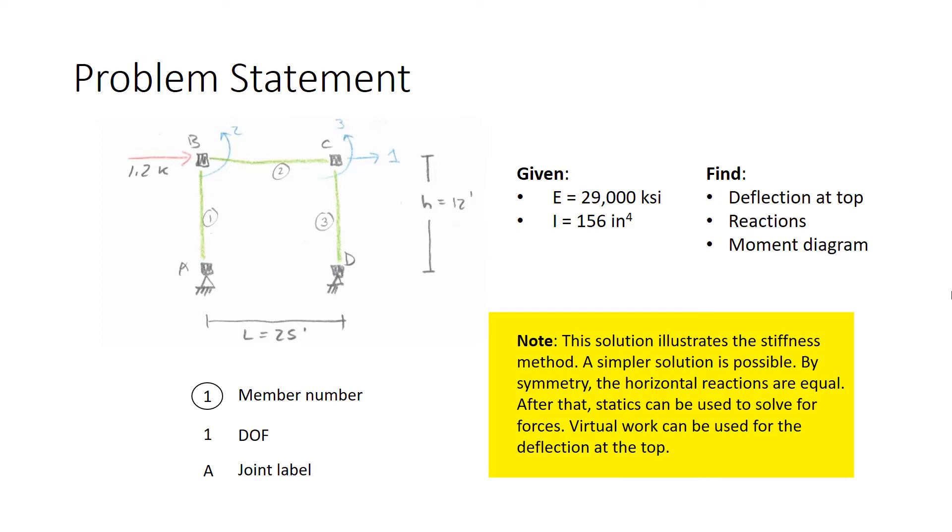As a note here, there are easier ways to solve this than to use the stiffness method. We're using the stiffness method to illustrate the method. The quickest way to solve this is by arguing from symmetry that the 1.2 kip load at the top divides out evenly to A and D, 0.6 kips at A and D. And from there, everything else can be solved using statics. Having said that, let's begin the problem.